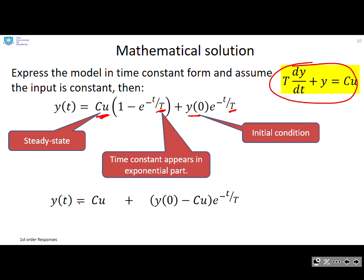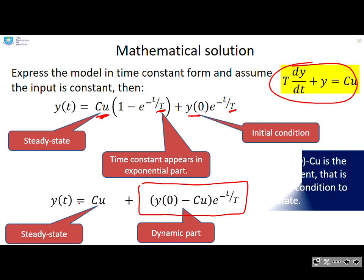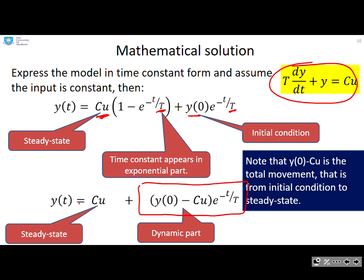Now it's sometimes convenient to rearrange the solution into this form. So basically I put both exponential terms together. You can see there I put both exponential terms together. So now the steady state is clearly the cu. The dynamic part, the bit that changes because it multiplies by the exponential, has got this y(0) minus cu term. So y(0) minus cu is the total movement. So y(0) is where you start and cu is where you finish. So y(0) minus cu is basically how far have you moved.